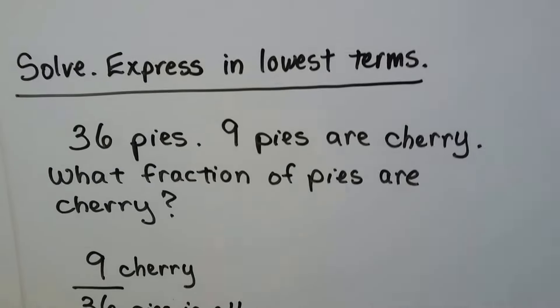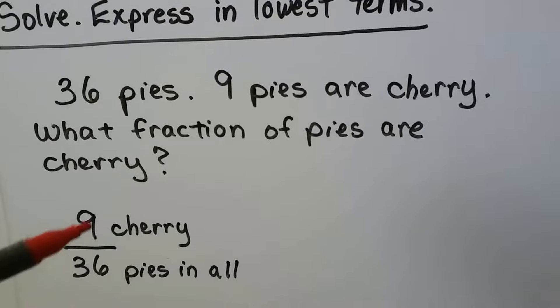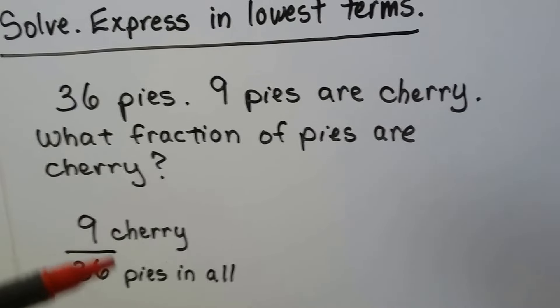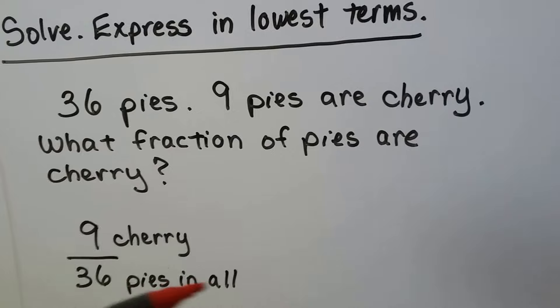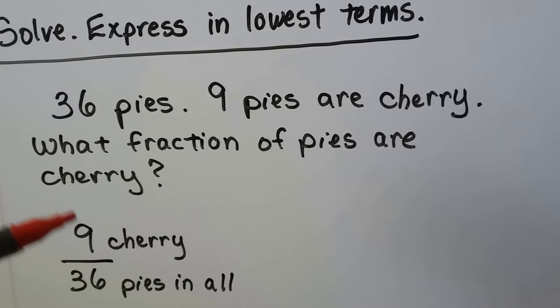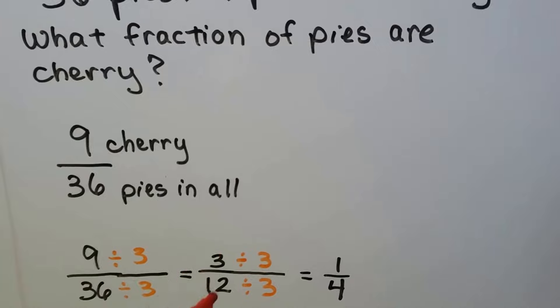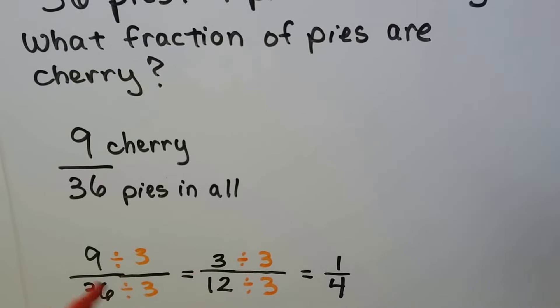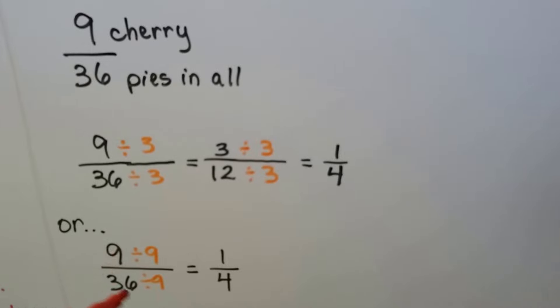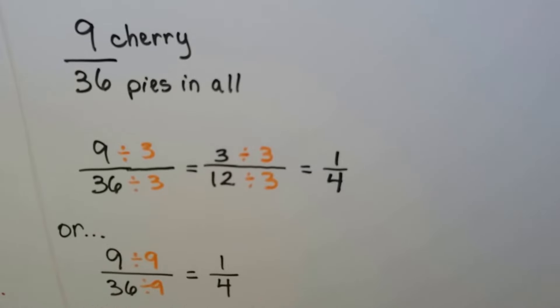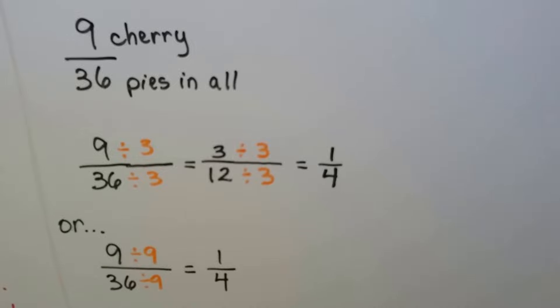Now it says to solve and express in lowest terms. So there's thirty-six pies. Nine pies are cherry. What fraction of pies are cherry? Well, nine are cherry and there's thirty-six in all. So we know that in all is going to be the denominator because that's the total amount. The denominator is always the total amount. And nine of them were cherry, so that's nine-thirty-sixths. So we can divide both the numerator and denominator by 3 and get three-twelfths. Nine divided by three is three. Thirty-six divided by three is twelve. We can divide by three again and get one-fourth. Or we could have just divided the numerator and denominator by nine and did it in one easy step because if you know your times table, nine times four is thirty-six. They both have nine in common. So we could have divided by nine.